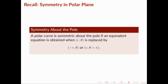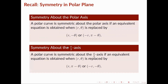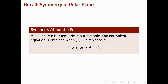It is also worth noting that if a polar curve is symmetric about two out of the three — the polar axis, the pi/2 axis, and the pole — then it automatically follows that the polar curve is also symmetric about the third one.